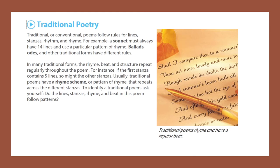Traditional or conventional poems follow rules for lines, stanzas, rhythm, and rhyme. For example, a sonnet must always have 14 lines and use a particular pattern of rhyme. In many traditional forms, the rhyme, beat, and structure repeat regularly throughout the poem. Usually, traditional poems have a rhyme scheme — a pattern of rhyme that repeats across the different stanzas. Ask yourself: do the lines, stanzas, rhyme, and beat in the poem follow patterns?